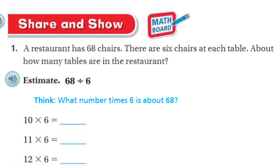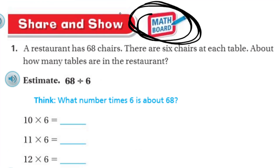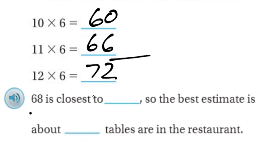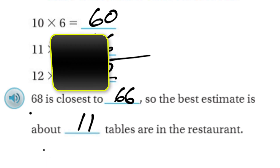Now it's time for Share and Show — get your math boards! It says the restaurant has 68 chairs. There are 6 chairs at each table. About how many tables are in the restaurant? So we have a total of 68 chairs, with 6 chairs at each table, giving us an estimate. What number times 6 is about 68? So: 60, and then 66, and then 12 times 6 is 72 — it's right in between. 68 is closest to 66. So the best estimate is about 11 tables in the restaurant.